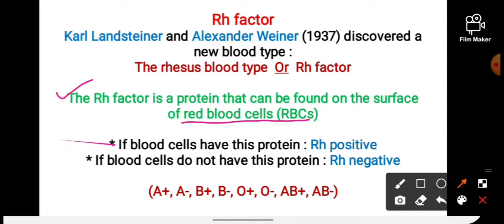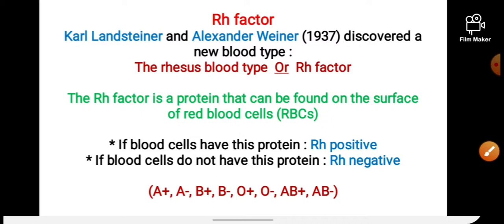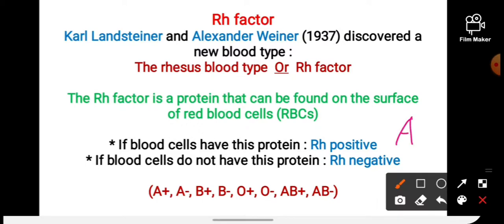For example, if my blood group is O and the RH factor protein is present in my blood, then my blood group becomes O positive. If a person does not have the RH factor, their blood group will be RH negative. For example, if person X has blood group A and the RH factor protein is absent, then their blood group becomes A negative. So based on the RH factor, a blood group can be either RH positive or RH negative.